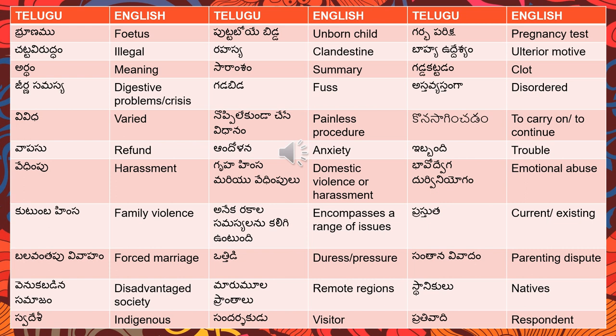'Forced marriage' — balavantapu vivah; balavantapu means forced, balavantam means force. 'Duress' or 'pressure' — otthidi. 'Parenting dispute' — santana vivaadam.